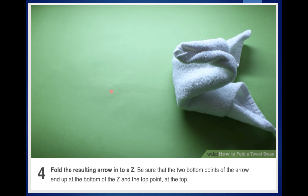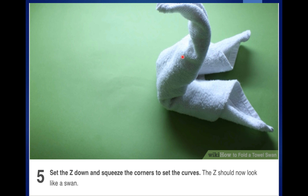Once you've done that — this is the easy bit — you're just going to fold the tea towel up into a Z shape. If you imagine this is like the Z right here, then it should start to look a little bit like a swan. The final step is you're going to set the Z down and squeeze the corners to set the curves. The Z should now look like a swan. Hopefully.